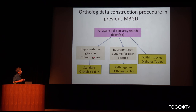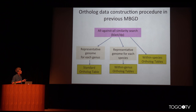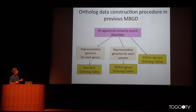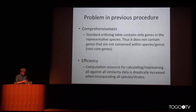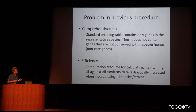In the previous procedure, for the standard ortholog table we used a representative genome for each genus, and also prepared taxonomy-specific ortholog tables — for example, a genus-specific ortholog table using a representative genome for each species, and a species-level table using all genomes belonging to that species. The first problem with this procedure is comprehensiveness: because we choose a representative genome before creating the ortholog table, the standard ortholog table contains only genes present in the representative genomes, potentially losing some information.